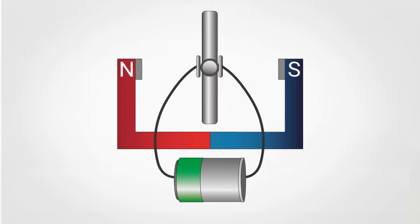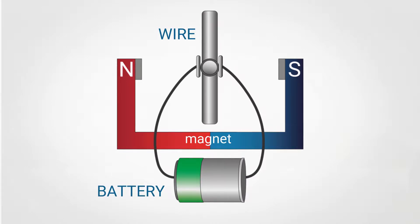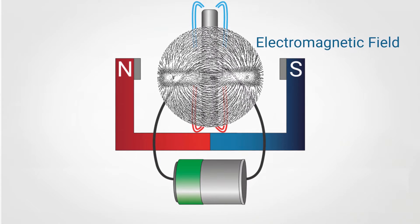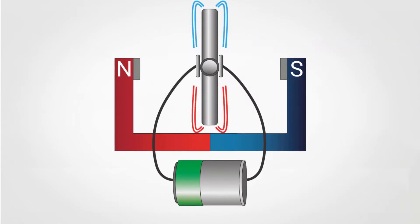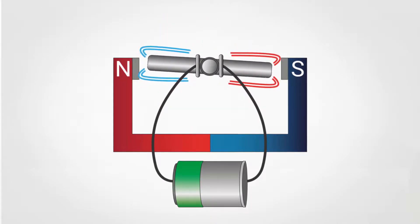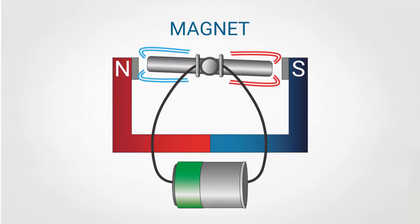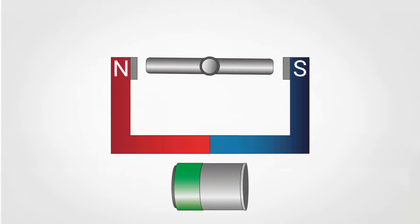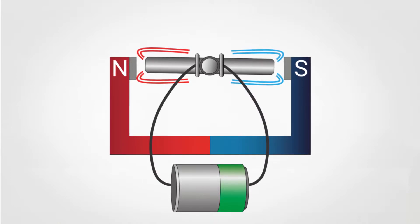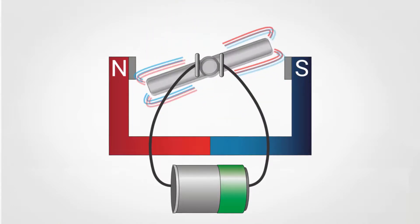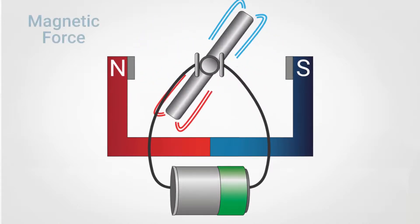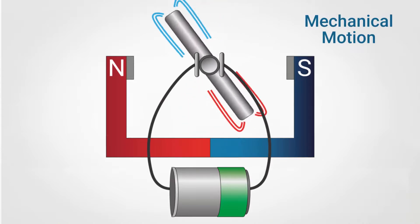Looking at this animation, you can see a wire connected to a battery. When the electricity flows through this wire, an electromagnetic field is created. This means that the electricity has temporarily turned the wire into a magnet. When the wire is disconnected from the battery, it is not a magnet anymore. If we hook it up the opposite way, its north and south pole reverse. An electric motor makes this process over and over, using the magnetic force to create mechanical motion.